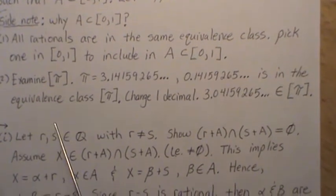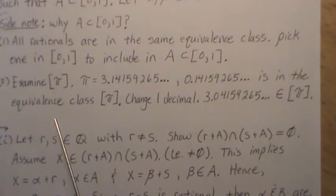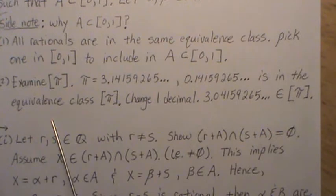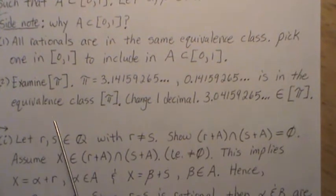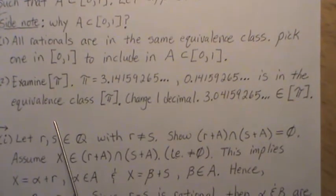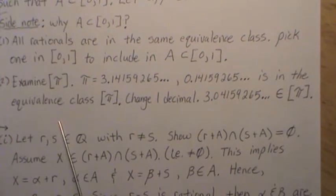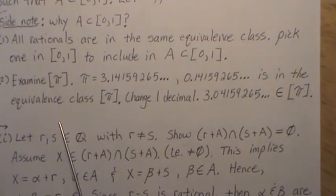There's a quote I absolutely love: if you go out at night and look up into the dark sky and see the stars — those are the rational numbers. The blackness between the stars represents the irrational numbers. That's how vast the irrational numbers are compared to the rationals.